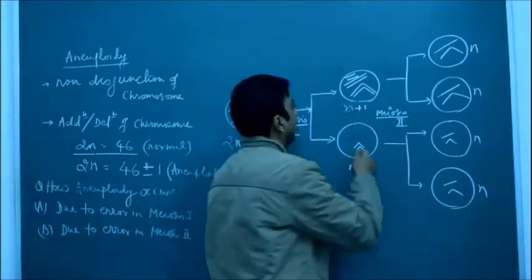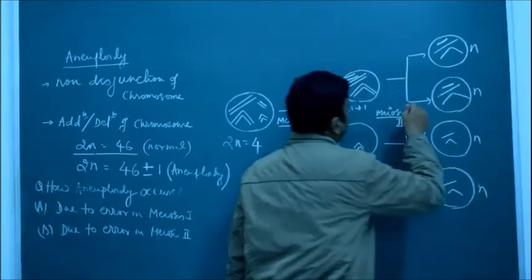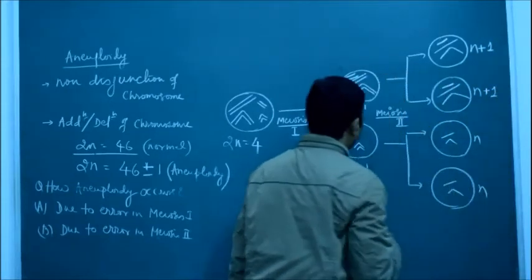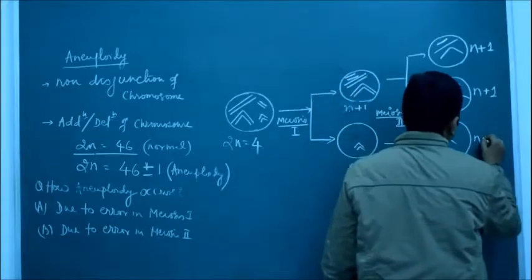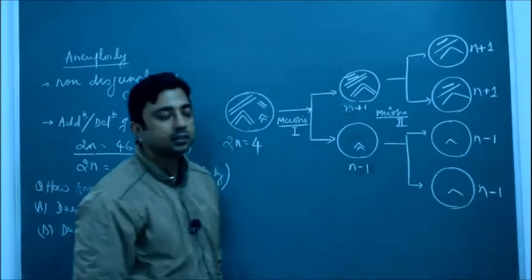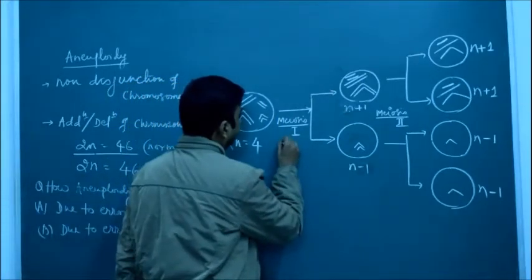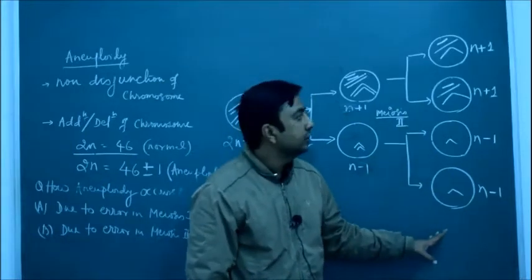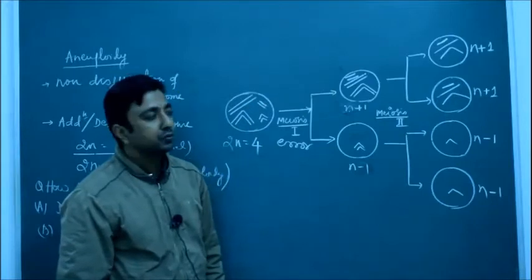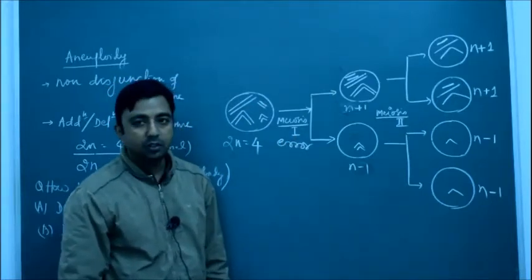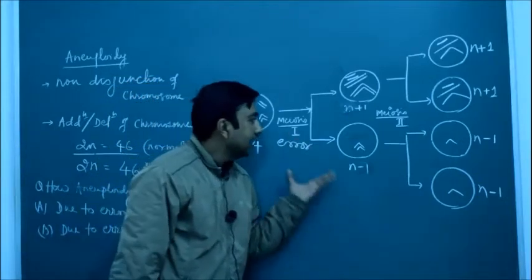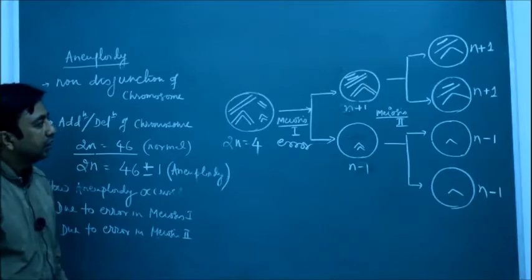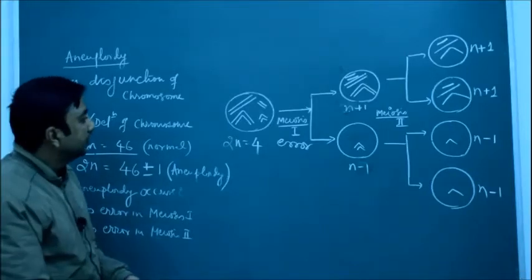In meiosis 2, the n plus 1 nucleus divides to give n plus 1 and n plus 1, and the n minus 1 nucleus divides to give n minus 1 and n minus 1. So if there is an error in meiosis 1, the end result will be four daughter nuclei — two having n plus 1 and two having n minus 1 number of chromosomes.